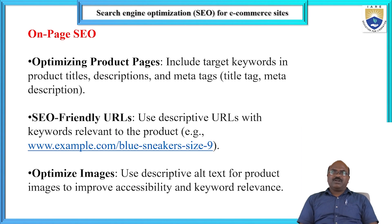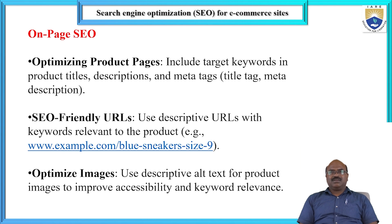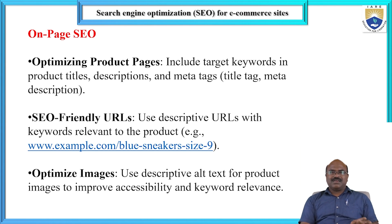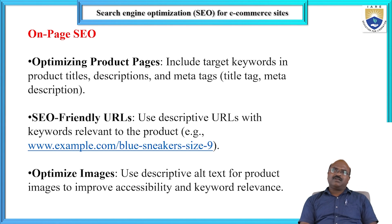These three things are very important in on-page SEO: one is optimizing product pages, second is SEO-friendly URLs, and third is optimized image alt text. These types of techniques and mechanisms can be implemented into the e-commerce business.